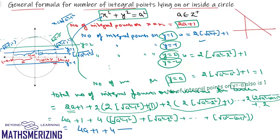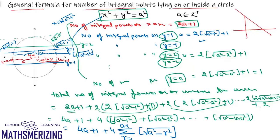The final formula is: total number of integral points on or inside x² + y² = a² equals 4a + 1 + 4·Σ ⌊√(a² - r²)⌋, where r varies from 1 to a - 1, and a is any positive integer.